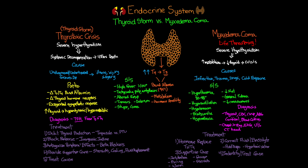To summarize myxedema coma: this is a life-threatening condition with a grave mortality rate. It's a case of severe hypothyroidism where the body's increased metabolism depletes thyroid stores, leading to crisis. The signs and symptoms result from a lack of thyroid hormone and can be very serious. Diagnosis relies on lab values and clinical signs, and treatment centers on hormone replacement, correcting fluids and electrolytes, full supportive care, and identifying the precipitating cause.